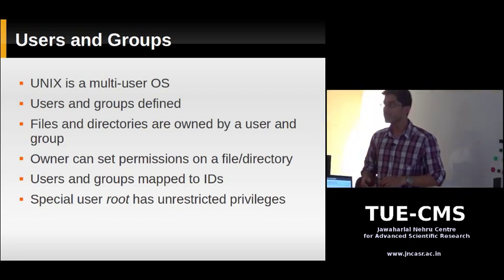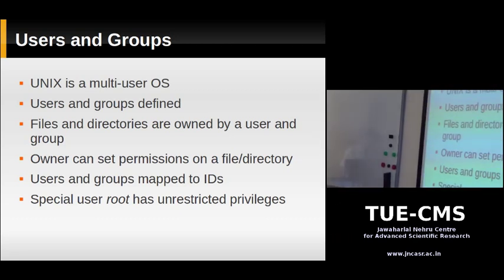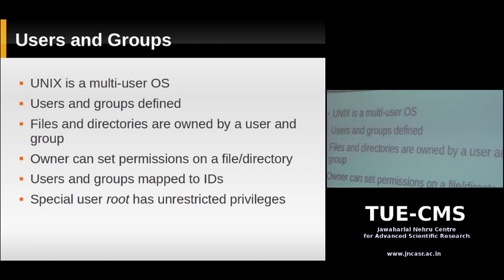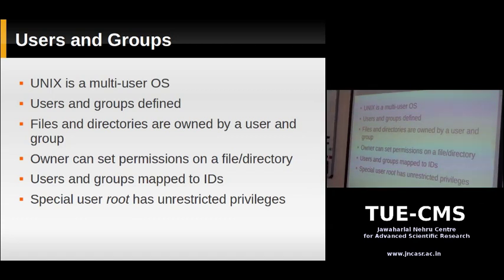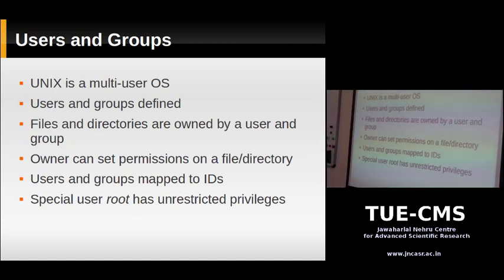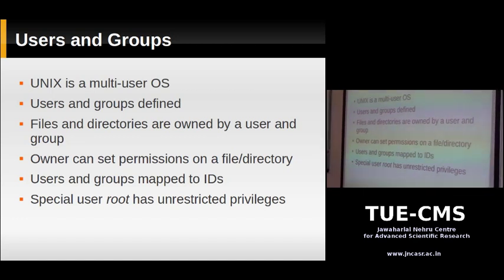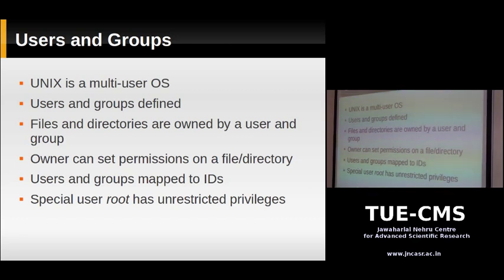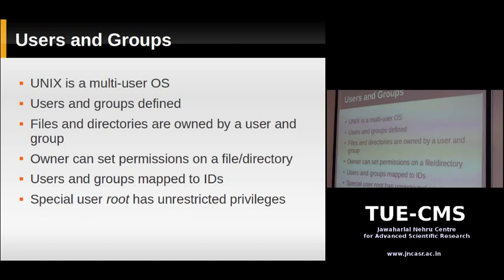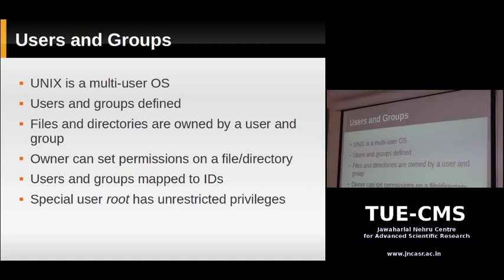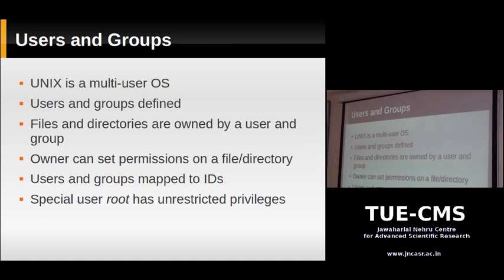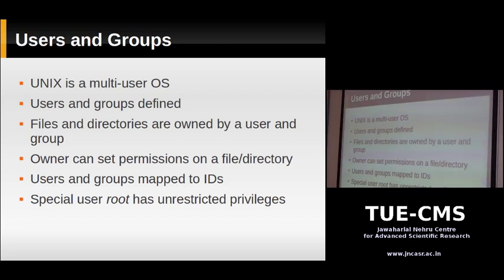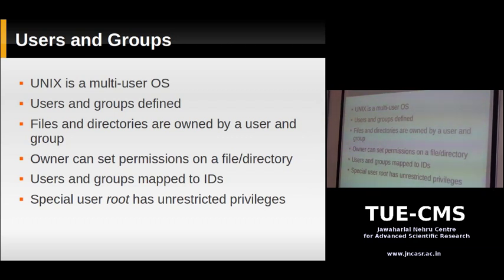Unix allows you to own files and set permissions on them. Every file has a user ID and group ID associated with it — names in Unix are mapped to numeric IDs. For example, user1 maps to ID number 5 and group1 maps to ID number 12. On a Unix system there is a special user called root, with user ID 0 and group ID 0.